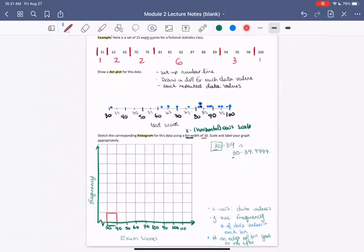In the 60 bin, I have two data values. In the 70 bin, I have two data values. In the 80 bin, I have six values. So I'm going to head up to one, two, three, four, five, six. In the 90 bin, I have three and in the 100 bin, I have one.